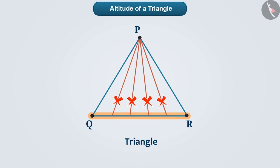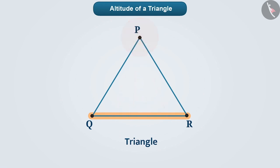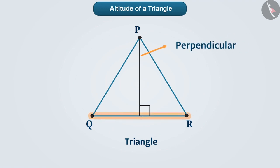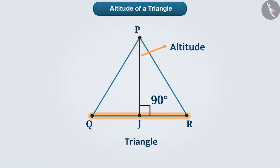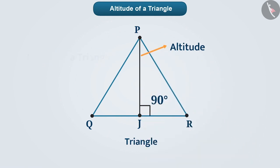No, not all of them give us correct information. From vertex P, to find the height of a triangle, we draw a perpendicular to its opposite side QR, which intersects side QR at point J. A perpendicular drawn from a vertex to its opposite side is called an altitude of the triangle. Here, line segment PJ is an altitude of triangle PQR that forms a right angle on side QR. This gives us the distance between the vertex and its opposite side — that is, the height of a triangle.